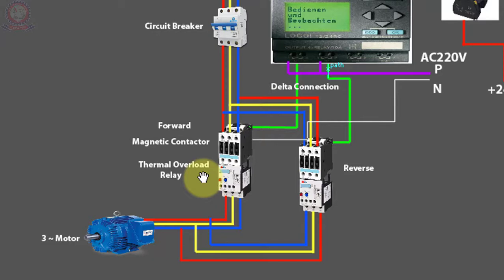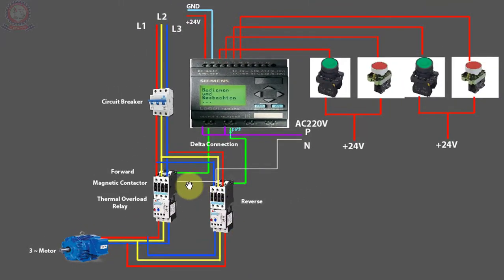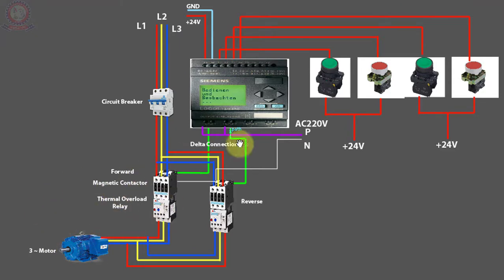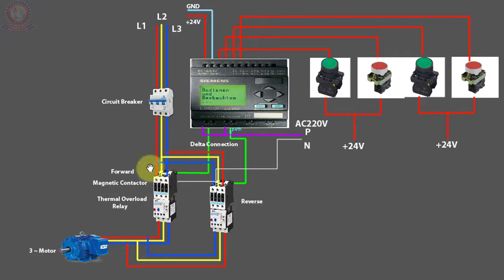We have a simple ladder diagram. If we energize the forward magnetic contactor, the motor starts forward. If we press the stop button, then press the reverse button, we press I3 to activate the reverse magnetic contactor. This contactor changes the wiring combination, which changes the rotation direction, and the motor will reverse.